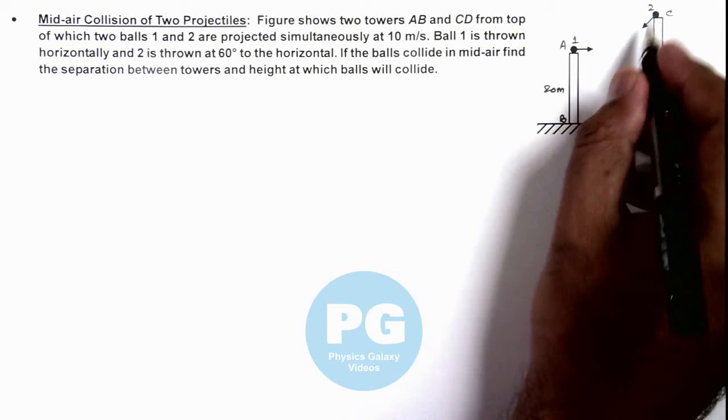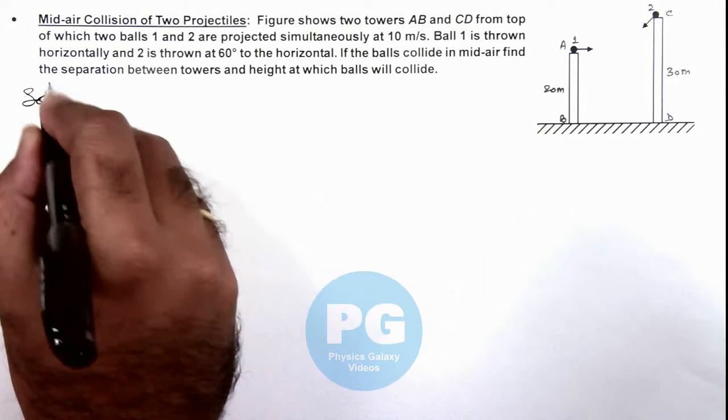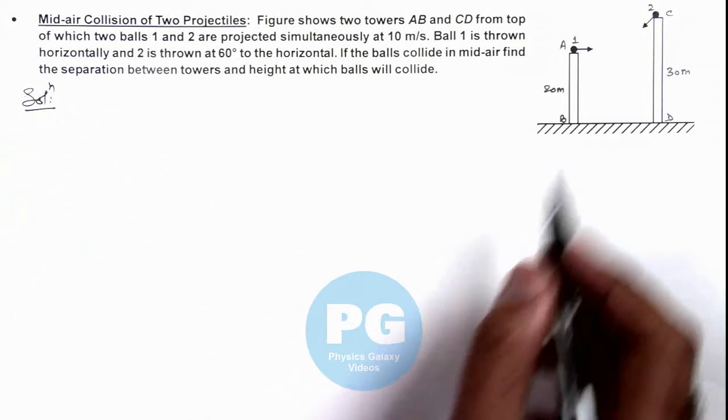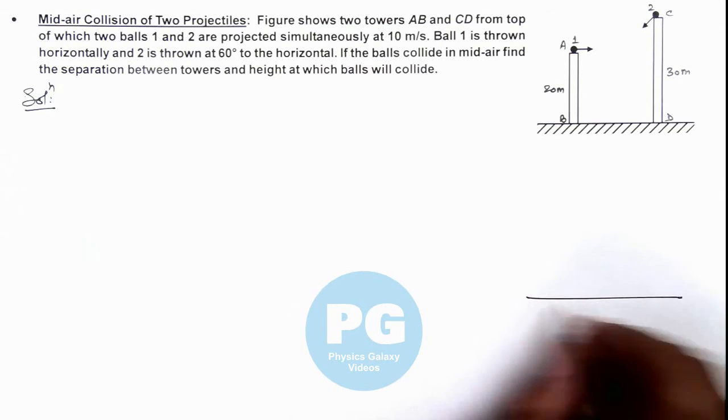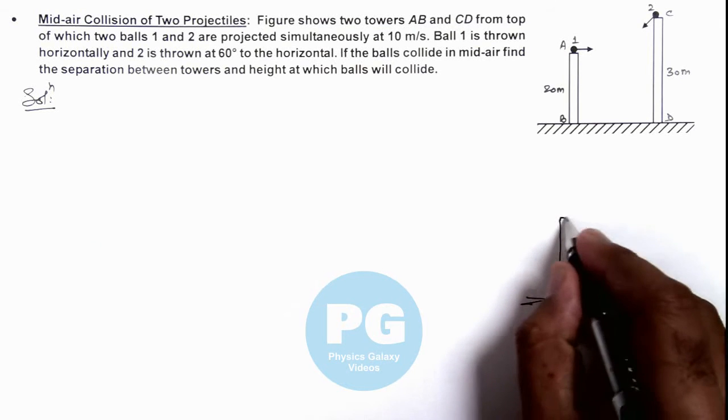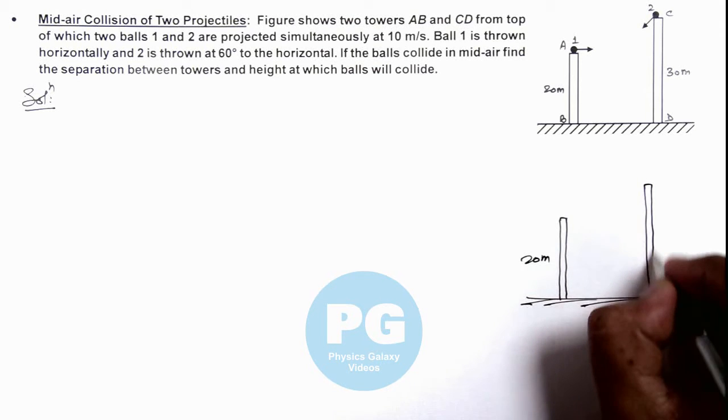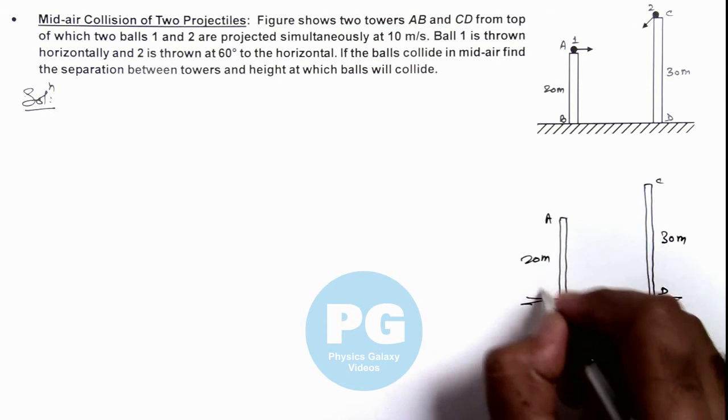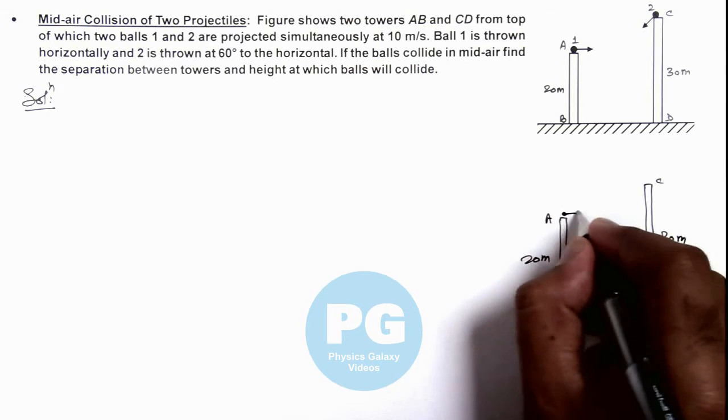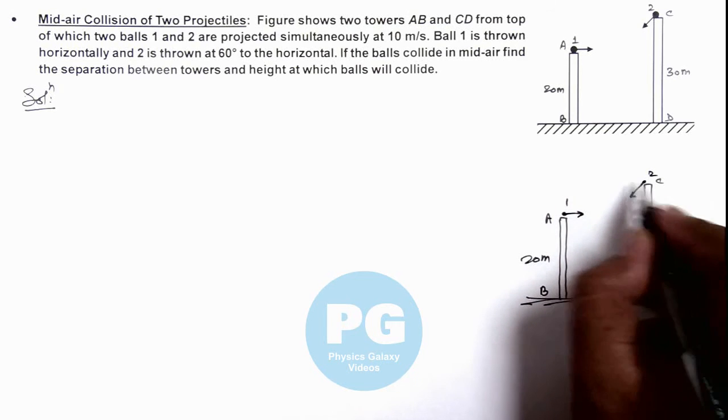When the projectiles progress in mid-air at some point they are going to collide. If we just draw the situation again, here it looks like this: This is tower AB which is of height 20 meters and this is tower CD which is of height 30 meters. In this situation, ball 1 is thrown horizontally and ball 2 is thrown at an angle 60 degrees with the horizontal, which is given here.